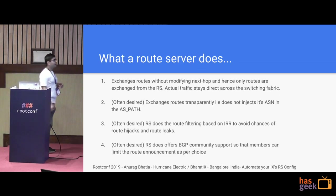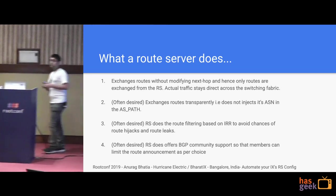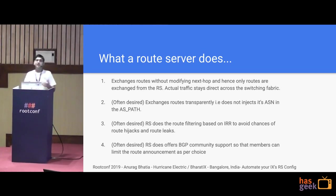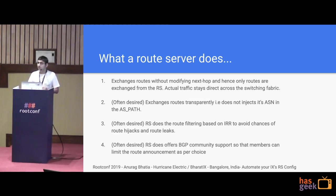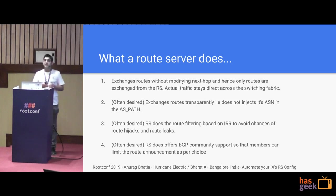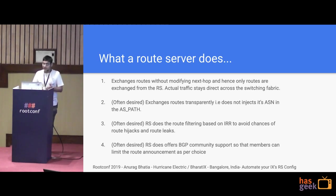What does a route server do? It's an important feature. When you peer with a route server, it reflects all the routes to you. With around 10 members, a route server will reflect all nine other members' routes to you and your routes to them. Importantly, it does not change the next-hop IP. Whether you have a bilateral session or a multilateral session via route server, the traffic flow is exactly the same — real traffic never flows through the route server, only routing data is exchanged.